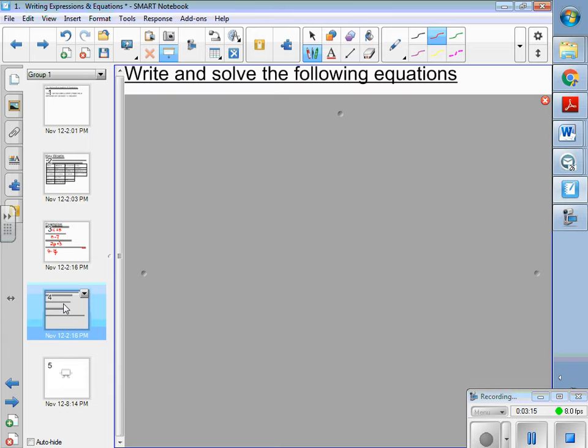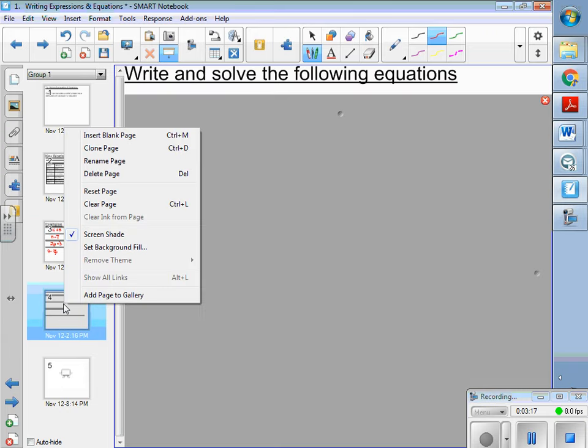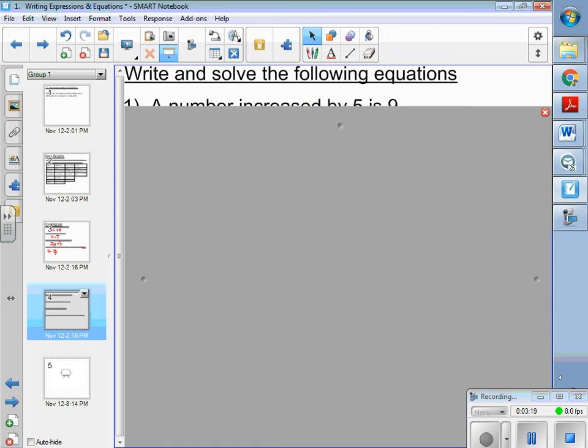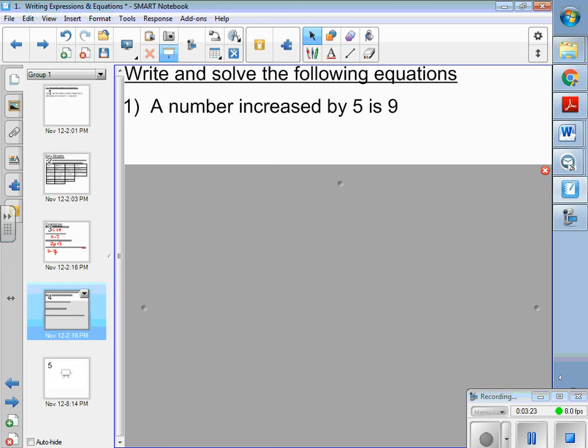Write and solve the following equations. A number increased by five is nine. So a number increased by five is nine. Well, what number plus five equals nine? Mentally, I hope you get that n is equal to four.